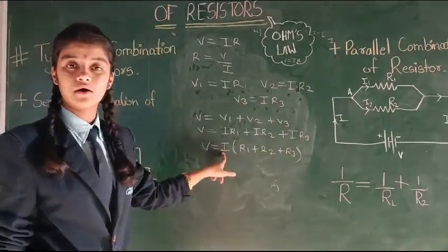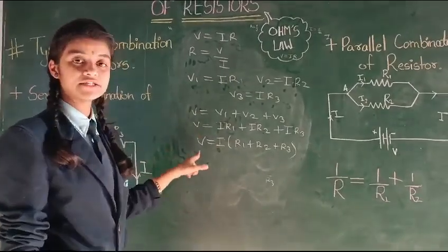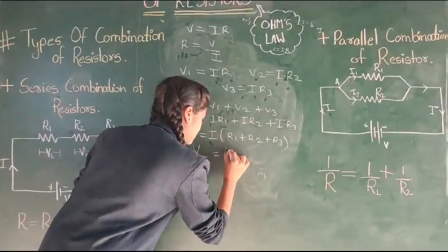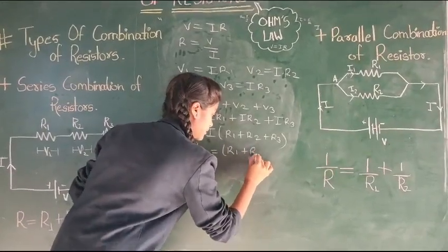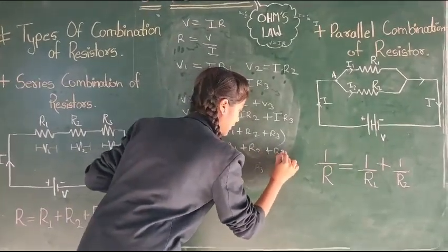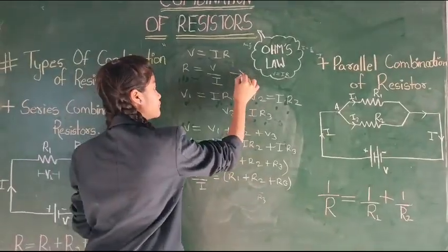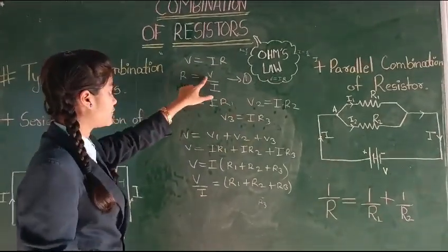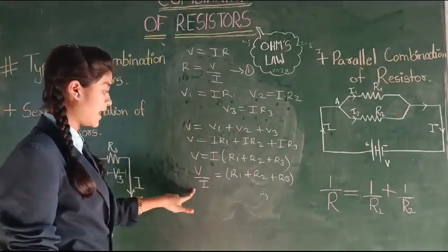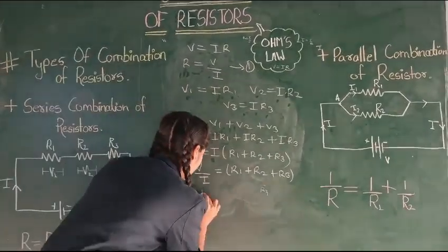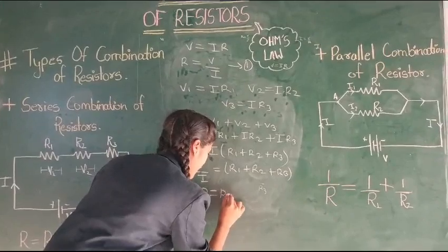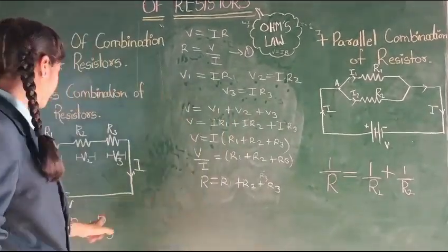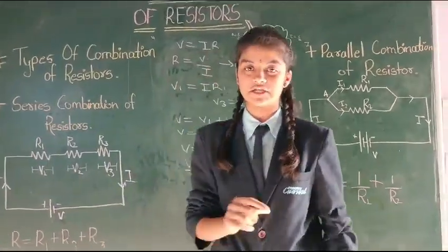R1 plus R2 plus R3. This I is in multiplication; when it goes to the LHS, it divides — means V by I equals R1 plus R2 plus R3. So, according to equation 1, we can write V by I as R. Therefore, R equals to R1 plus R2 plus R3. Hence, proved the formula for series combination of resistors.